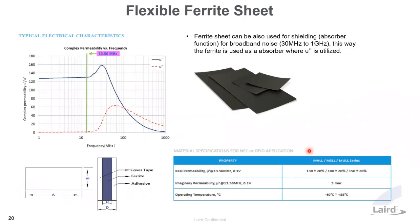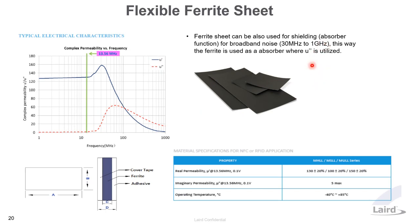Laird also offers flexible ferrite sheets — a sandwich construction where a very thin ferrite layer is sandwiched between a top cover tape and a bottom adhesive layer. This functions as an absorber for approximately 30 MHz up to about 1 GHz. Beyond 1 GHz, you may approach other Laird performance materials for much higher frequency absorption.